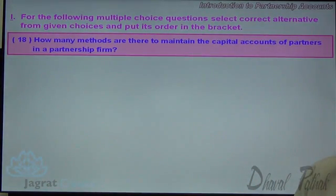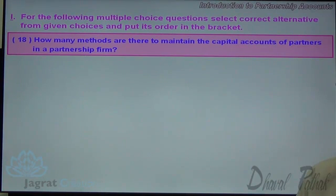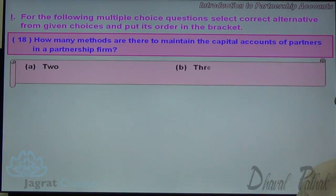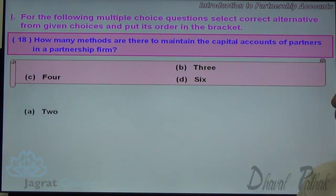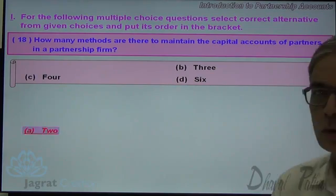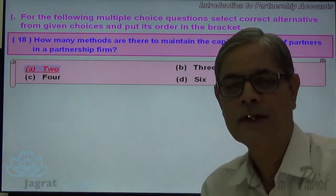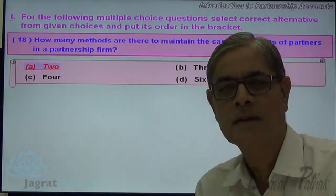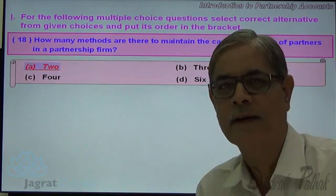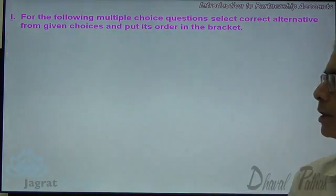Next. How many methods are there to maintain the capital accounts of partners in a partnership firm? The options are 2, 3, 4, and 6. The correct answer is 2. There are two methods — one is the fixed capital account method and the second is the fluctuating capital account method.